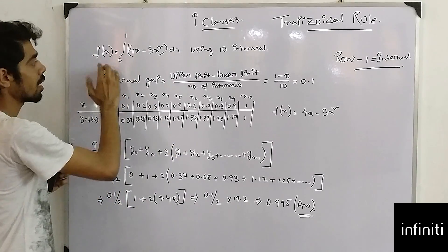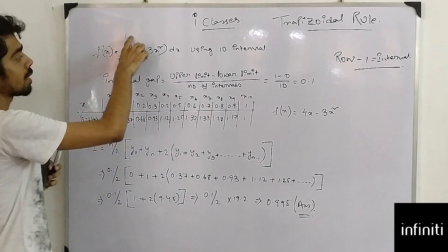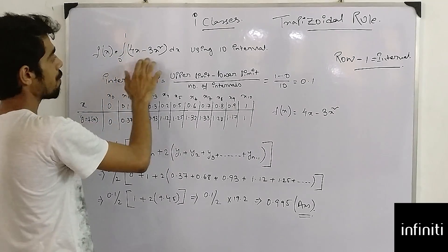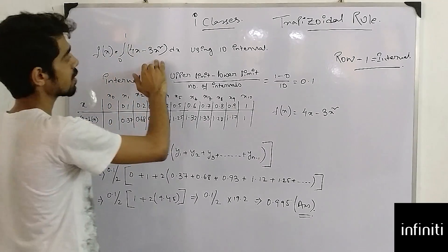This is my function given: this is the lower limit, this is the upper limit, and this is my fx which is 4x minus 3x square dx.